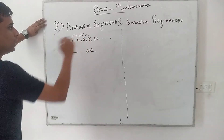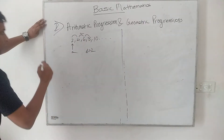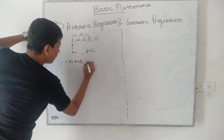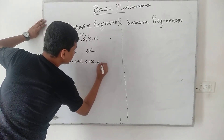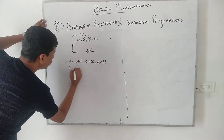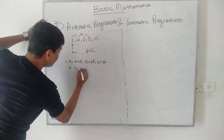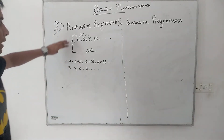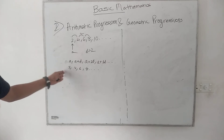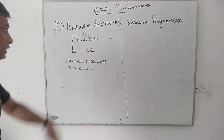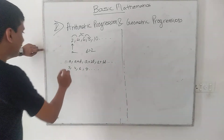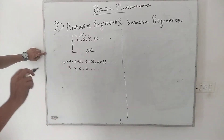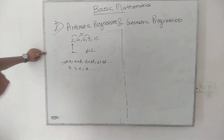These values can also be written in the format: A, A+D, A+2D, A+3D, and so on. That gives us 2, 2+2=4, 2+4=6, 2+6=8, and so on. For any sequence of numbers in the form A, A+D, A+2D — it is in arithmetic progression.